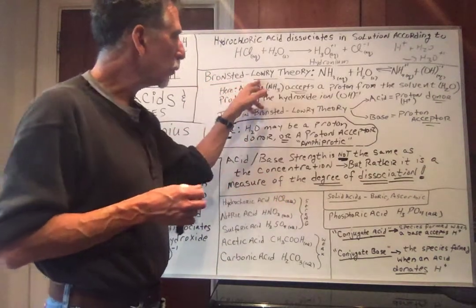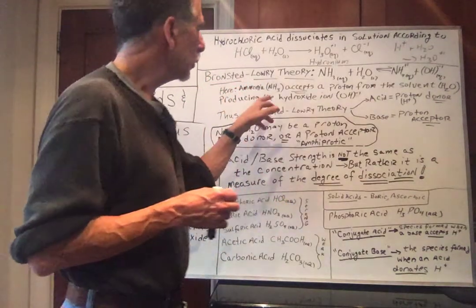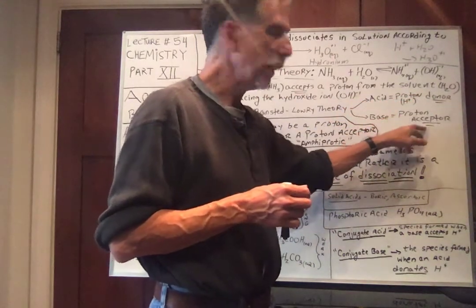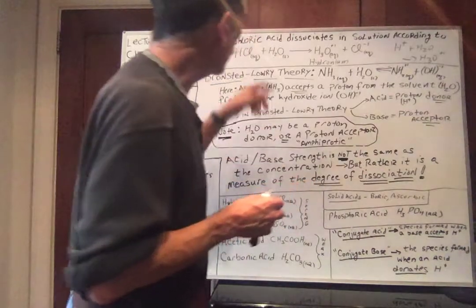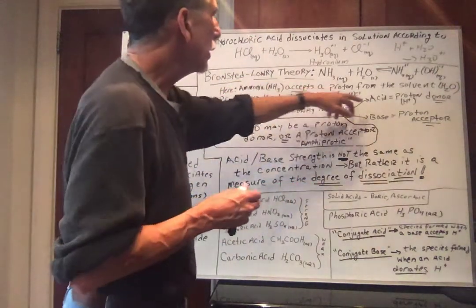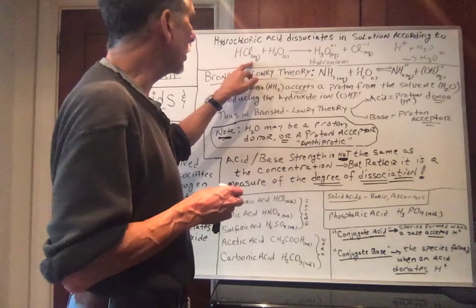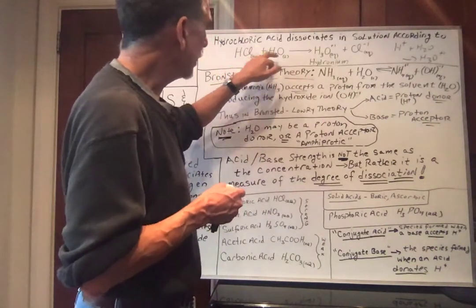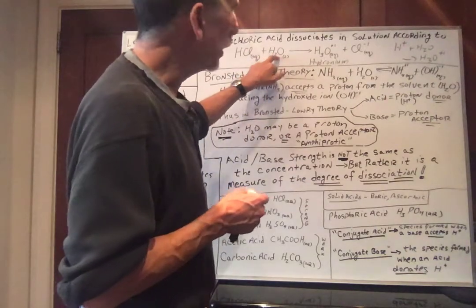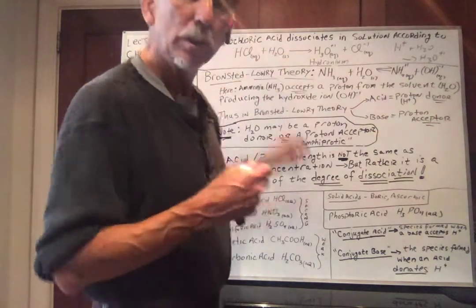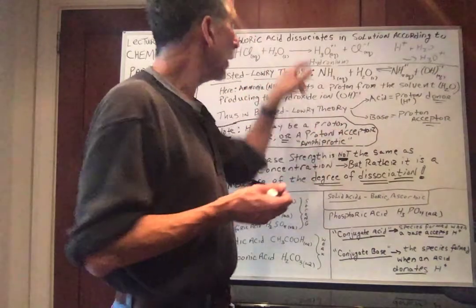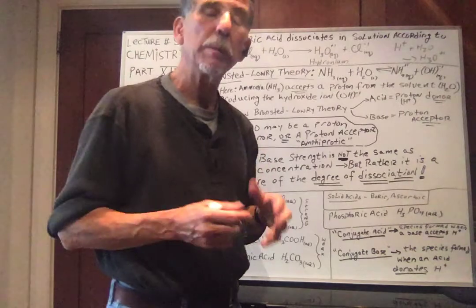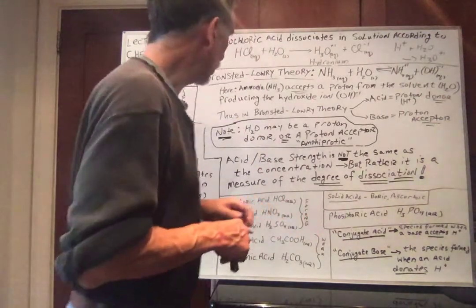The theory of Bronsted-Lowry, for Bronsted-Lowry, an acid is something that donates a proton, and a base is something that accepts a proton. So according to Bronsted-Lowry, the acid here is something that donates the proton. What's donating a proton is the HCl aqueous. What's accepting the proton is the H2O, the water. So in the theory of Bronsted-Lowry, in this reaction, water is accepting a proton, water is behaving as a base. Pay attention.